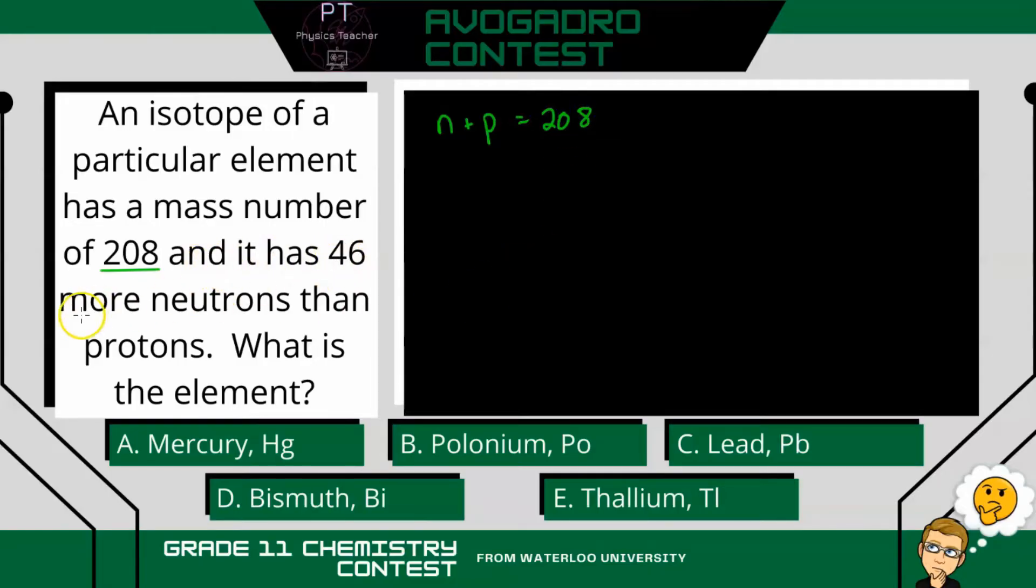And then it says it has 46 more neutrons than protons. So let's write that again. Here's another equation. If we take the number of neutrons and subtract the number of protons, we get 46. So that's two equations there with two unknowns.